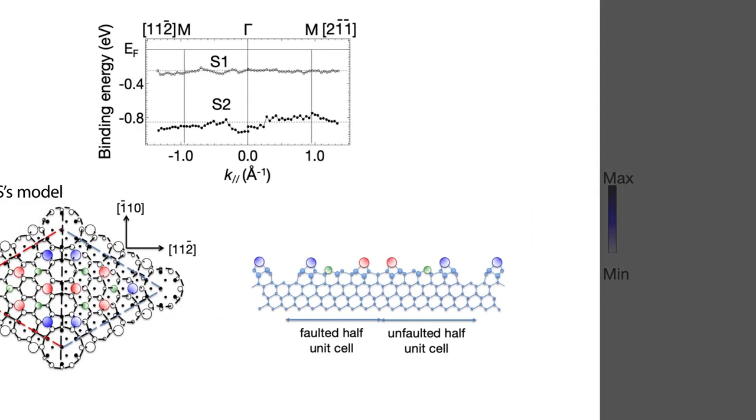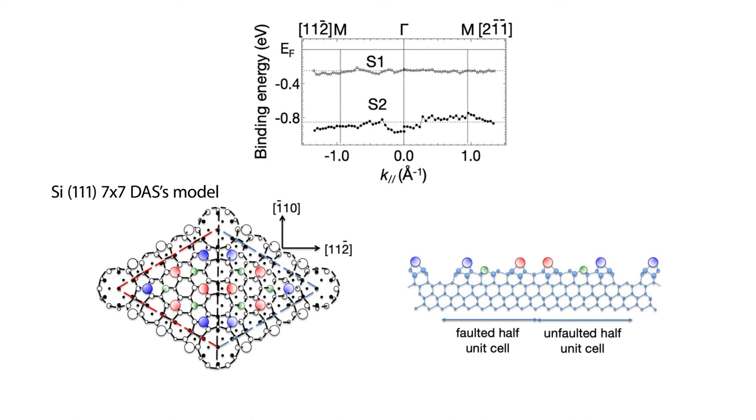The upshot is that S1 and S2 are not itinerant band states, but are actually localized to the aditoms and the rest atoms of the 7x7 surface. They do not cross the material's Fermi level, lying well below, indicating that the surface is not metallic.